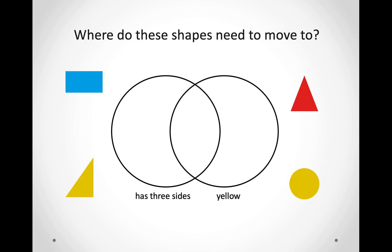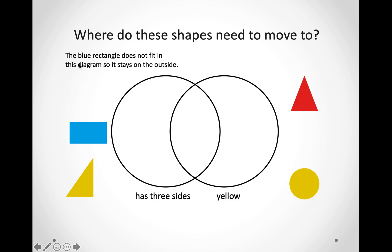Let us try another one. Where do these shapes need to move? We have the blue rectangle. Our circles say has three sides and yellow. So, we have to look at how we are going to sort out our information first. We are looking for shapes that have three sides and shapes that are yellow. Let us look at this rectangle. Does it have three sides? One, two, three, four — no, it doesn't. Is it yellow? No, it is not. So, it stays outside the box.